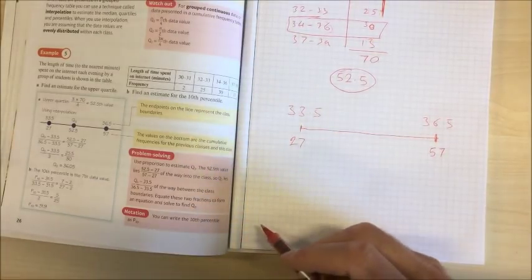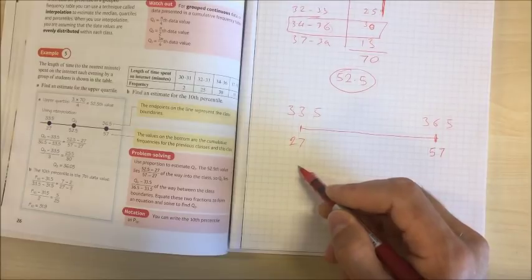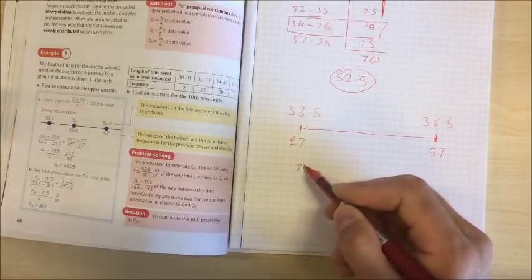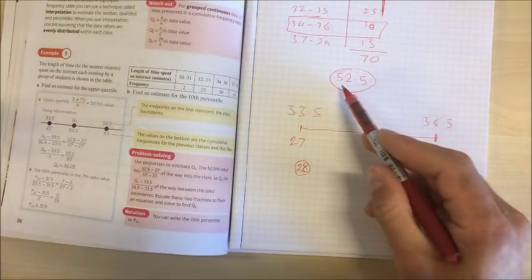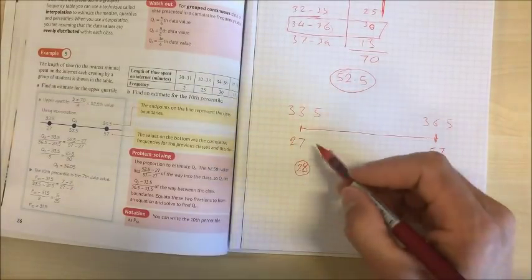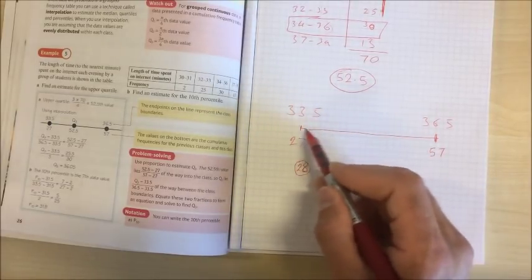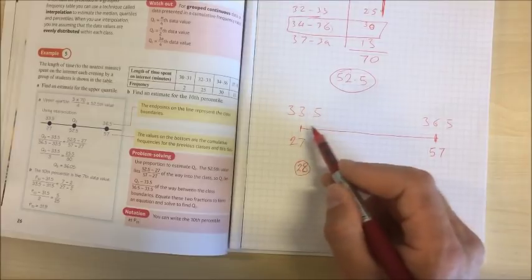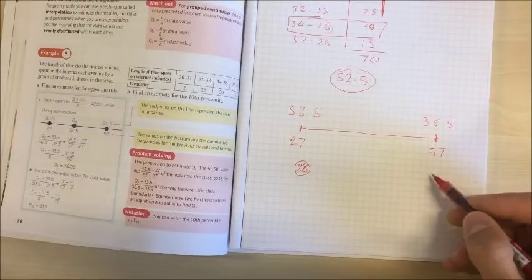So why isn't it good enough to just say well the median is somewhere in this group? Well imagine it like this. If I knew the median was piece of data number 28, well we'd expect that to be down at this end of the range wouldn't we. We'd expect it to be closer to 33.5. If we were looking for piece of data number 56 we'd expect it to be up here close to 36.5.